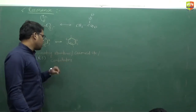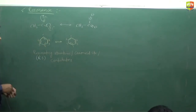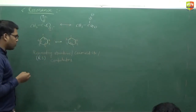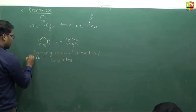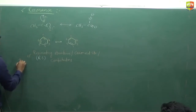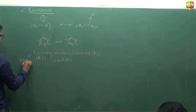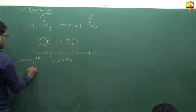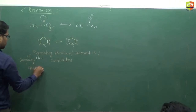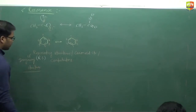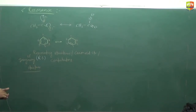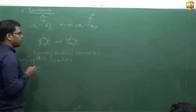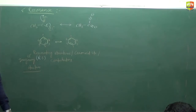Canonical structure and resonating structure are the same thing. Contributors means also the same thing — all these RS contribute into the real structure. All these resonating structures are imaginary structures; they are not real structures. The real structure is the combination of all these resonating structures, and that we call the resonance hybrid or resonating hybrid.